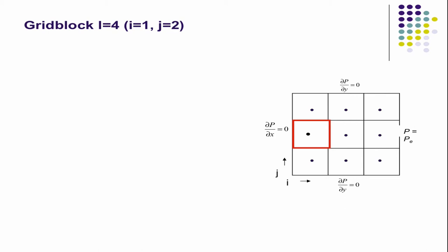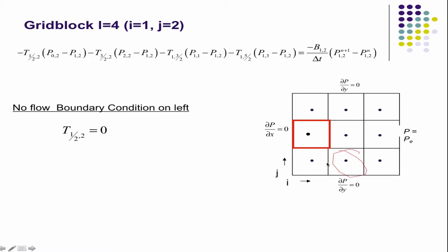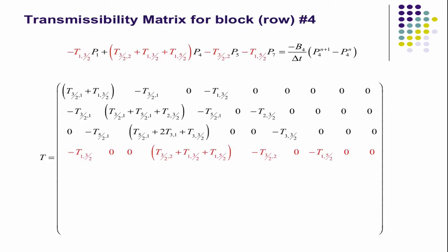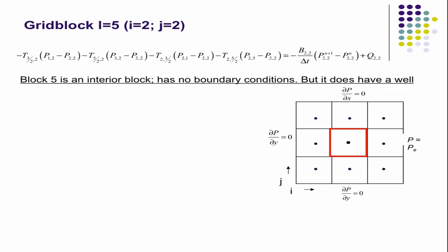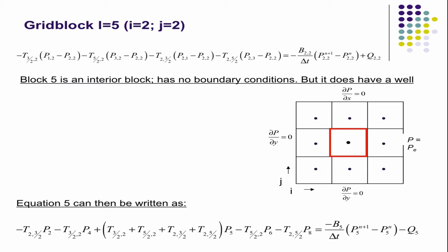This is more of the same. You know, it's essentially the same as this grid block. You just have to keep track of separate indices to get that. The center one's really easy, right? You're just computing the transmissibilities along all the boundaries. That one does have a well. So we have to account for that. It's a constant rate well. So you just have the Q5 over here. It's a constant rate well.